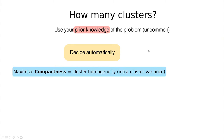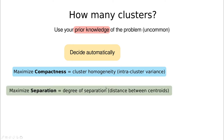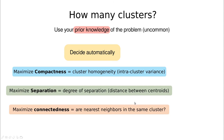The first ingredient for a good clustering is to maximize compactness — meaning cluster homogeneity, so that within a cluster we have low variance and all points are more or less packed together with no huge differences between them. The second criterion is to maximize separation, meaning the separation between the centroids of different clusters — we want different clusters to be clearly separated from each other.